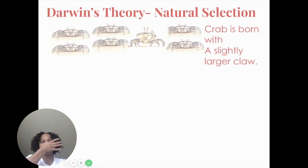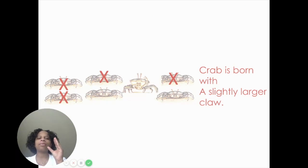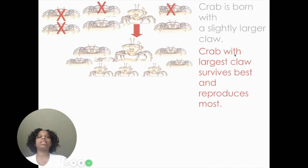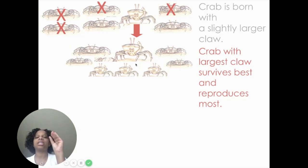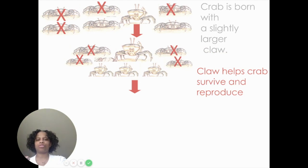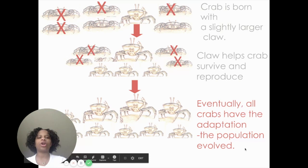Let's see Darwin's theory in practice. You have a crab, and there's a baby crab born with a slightly larger claw, making it better suited for its environment — able to get more food while other crabs can't, so they die off. The crab with the largest claw survives best and reproduces the most. He finds a mate, they make babies, and those babies have the large claw as well. This large claw is a new adaptation genetically in the population to help them survive and reproduce.